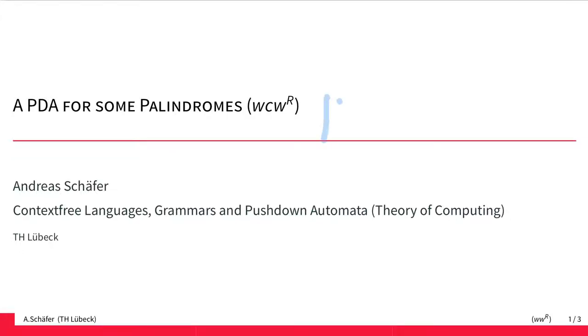This is the first how-to on constructing a pushdown automaton for a given language. The language we're looking at here is the language of some special palindromes that have a C in the middle. So the set of words that are the same read from left to right and from right to left with the exception that there must be a C in the middle.